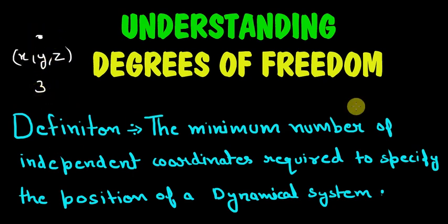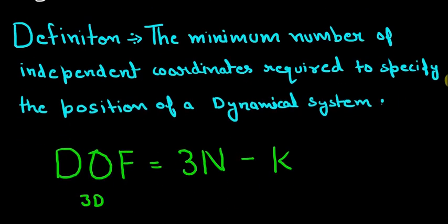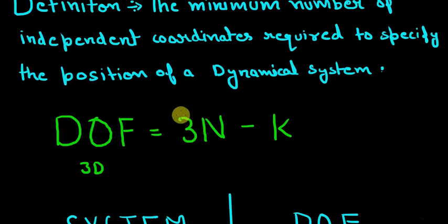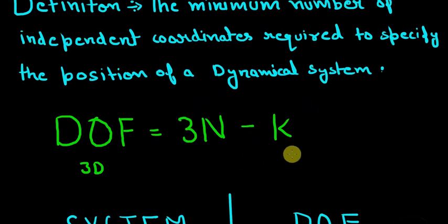Now let's take a look at the formula for degrees of freedom. This three represents the dimensions of the space, n is the number of particles, and k is called constraints — the restrictions on the particle.